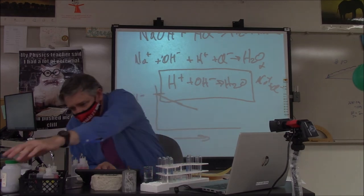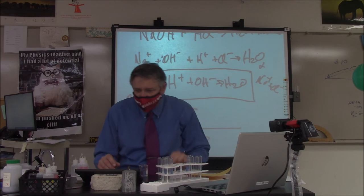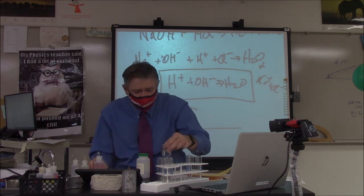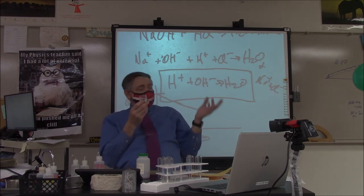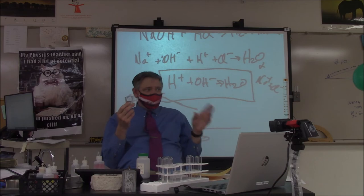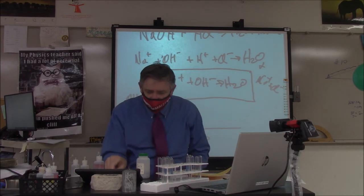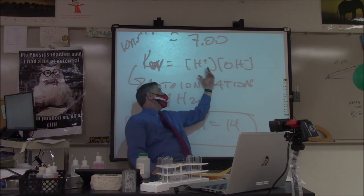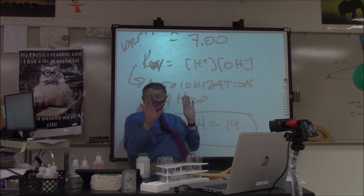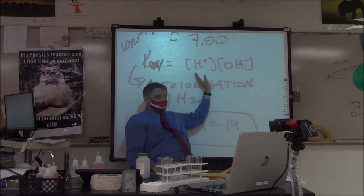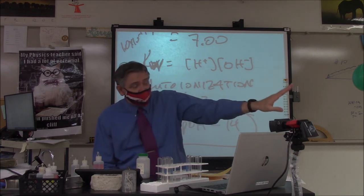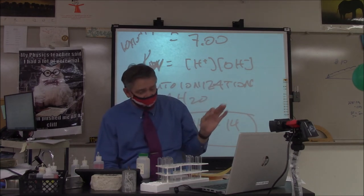When you do net ionics, always write the cation first, the anion second. This should balance on number of particles and on charge: one plus plus one minus equals zero, because water has no charge — it's a neutral molecule. Net ionics have to balance on two things: number of particles and charge. To water, I'm going to add some phenolphthalein — and what you'll see is that water actually has some hydronium ions and some hydroxide ions floating around. When neutral water has a concentration of both at 1.0×10⁻⁷, they balance each other out.